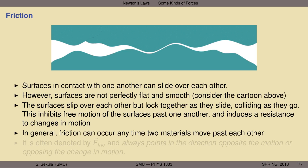Friction can occur anytime two materials move past each other, and some materials are better than others — think about nonstick cookware coated in Teflon, with very smooth surfaces. Nonetheless, it's not perfect, and you can't get an object to remain in motion forever if it's rubbing across that surface. Friction always opposes the direction of motion — it slows things down and eventually brings them to rest.